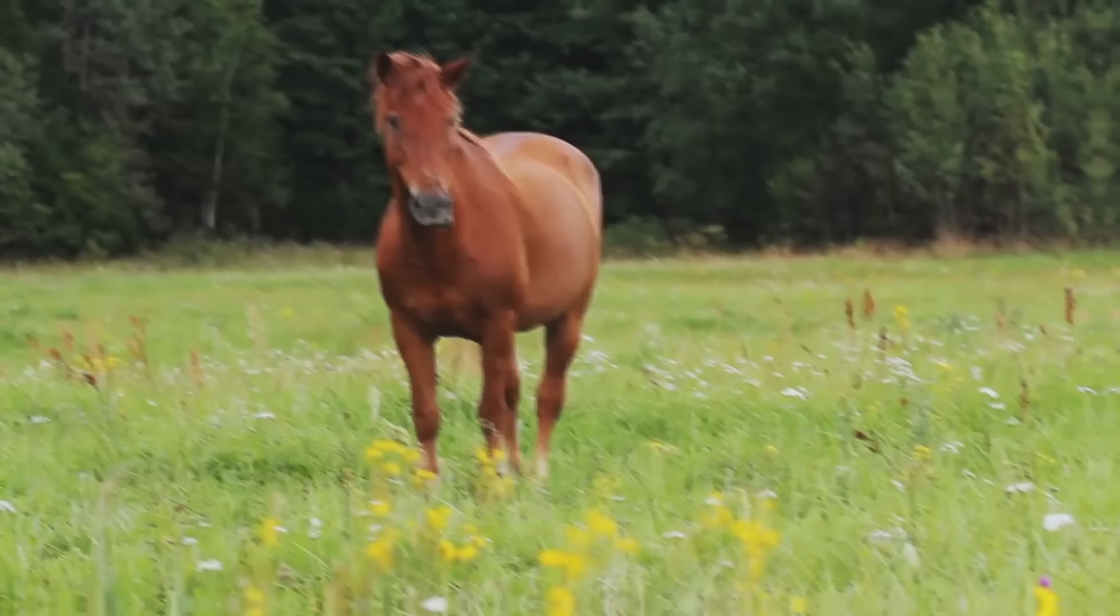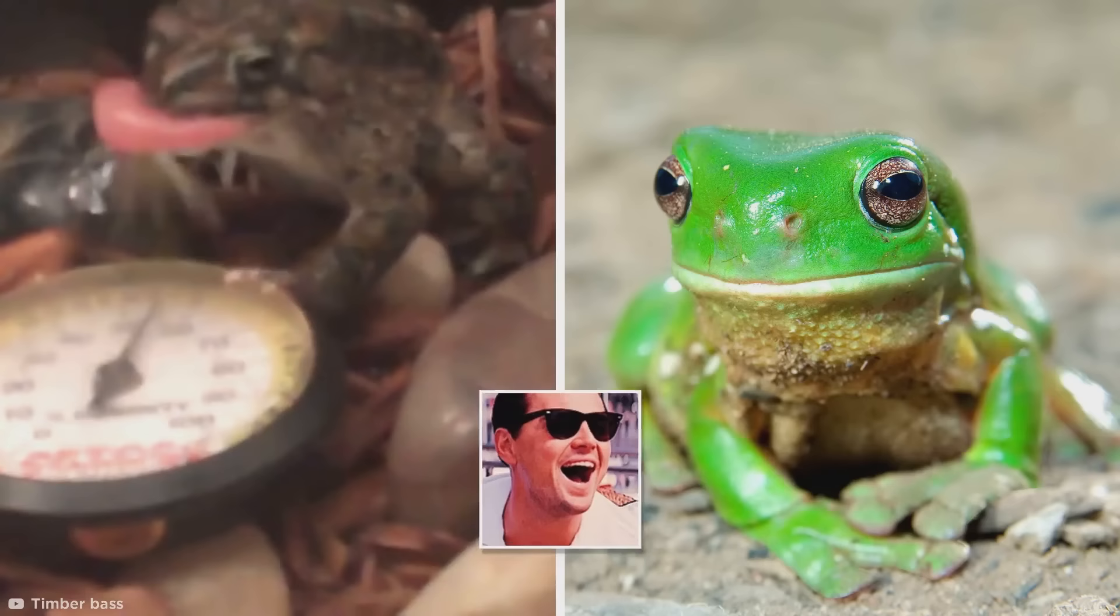It might surprise you to learn that frogs aren't the only animals that can't vomit. Horses, rabbits, and rats can't chuck up either. But only a select few creatures can turn their tummies inside out. Sharks are also capable of full gastric aversion, which helps them to avoid poison and evade predators. It's impossible to know exactly how a frog feels before they chuck up their stomachs, but it's safe to say a little green is a good guess.